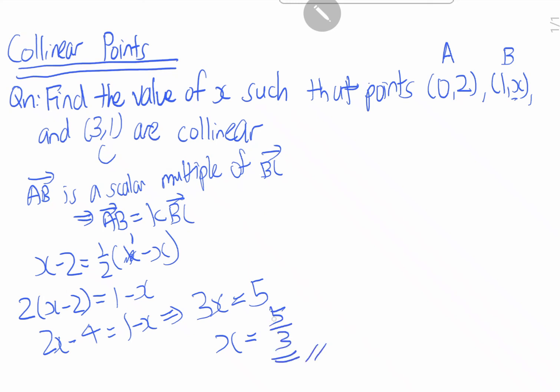So we have already found the value of x. So now this means that (0,2), (1, 5/3), and (3,1) are collinear.